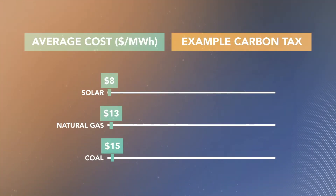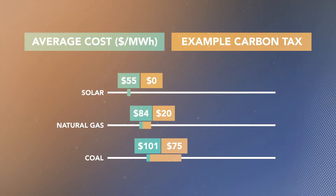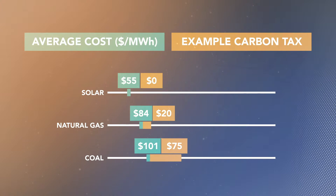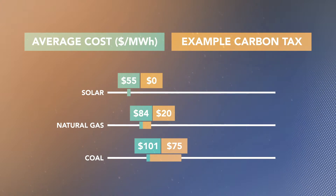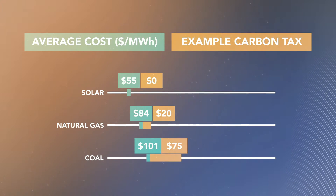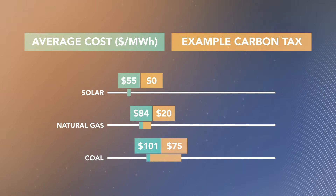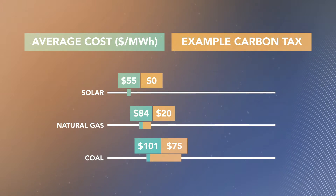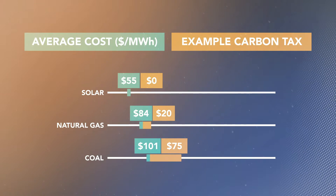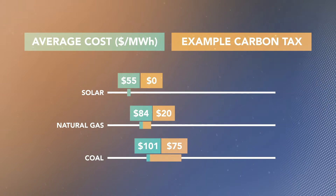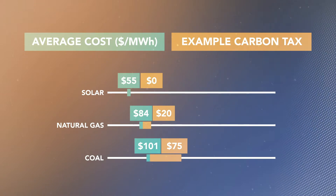But for a carbon tax to succeed, the taxation rate needs to accurately equate to the size of the externality. If the tax is too low, then emitters have little reason to change their behavior. If the tax is too high, it can shut down desirable markets or cause producers to hide their pollution, or move production to so-called pollution havens where taxes are lower.